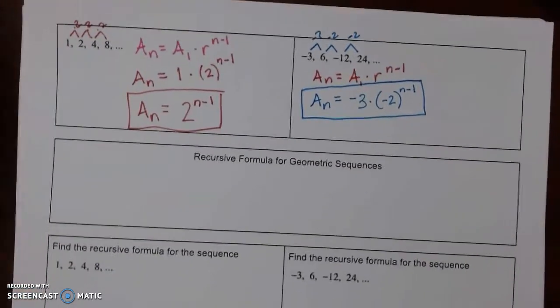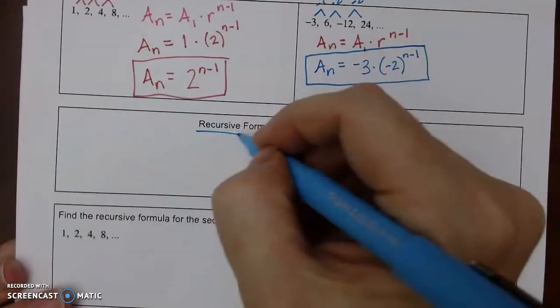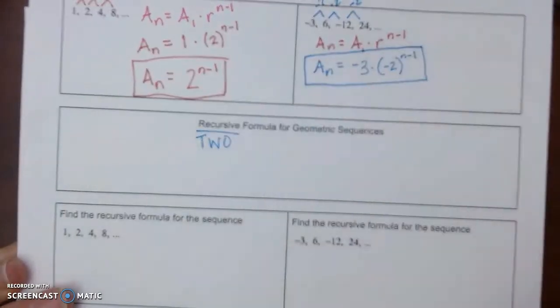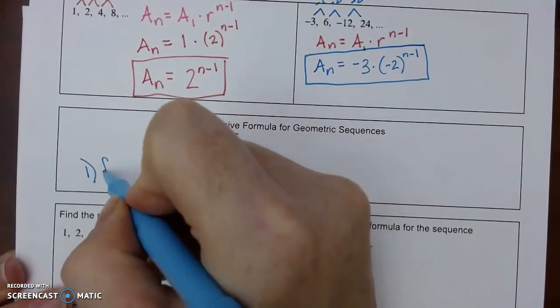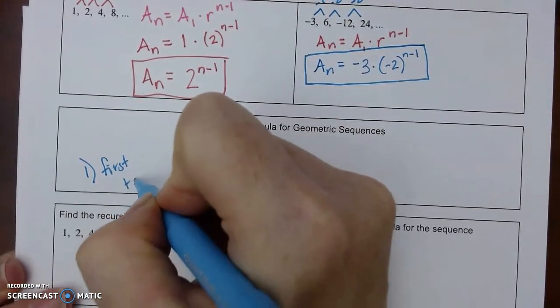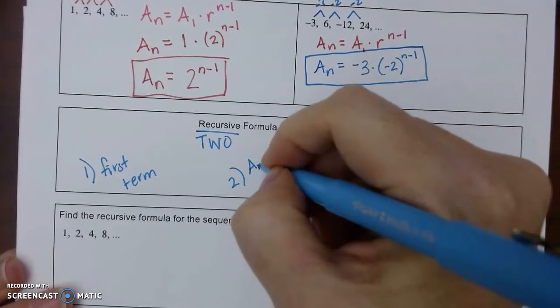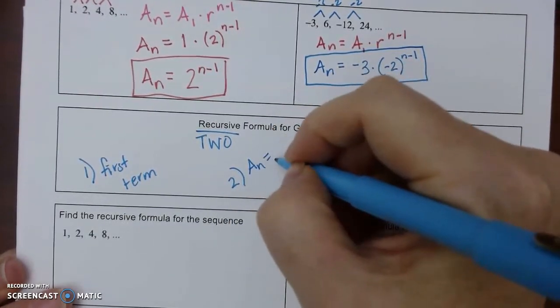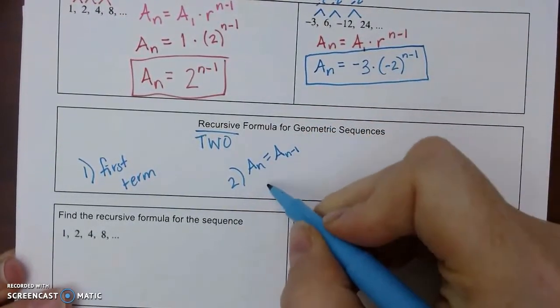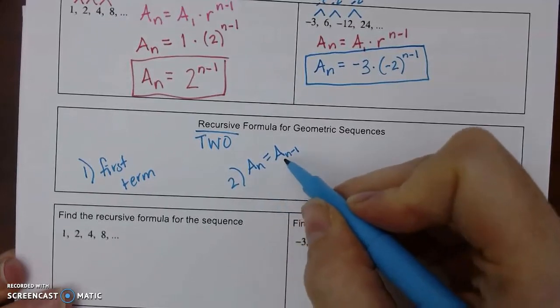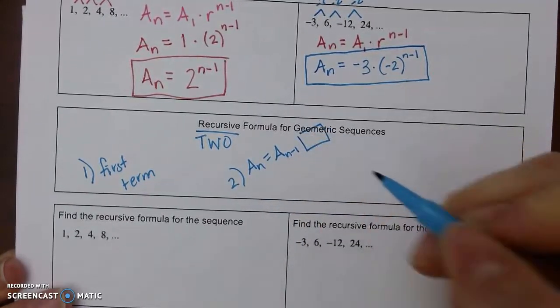Now, same thing for recursive. You always want two formulas. One is going to be the first term. And then the second one is going to use the notation. Remember that stood for our next term and our previous term, and then whatever our pattern is.